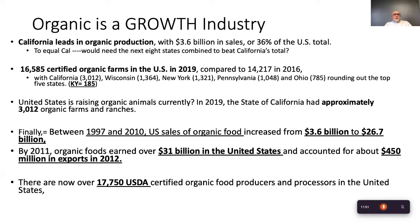You may want to look at Kentucky in your research. Beyond produce and grain crops, animal agriculture is also heavily produced organically, particularly in California. Between 1997 and 2010, U.S. sales of organic food increased from $3.6 billion to almost $30 billion. By 2011, organic foods earned over $31 billion in the U.S. and accounted for $450 billion in exports. It is a growth industry. Currently, we have 17,750 certified farms certified by the USDA.